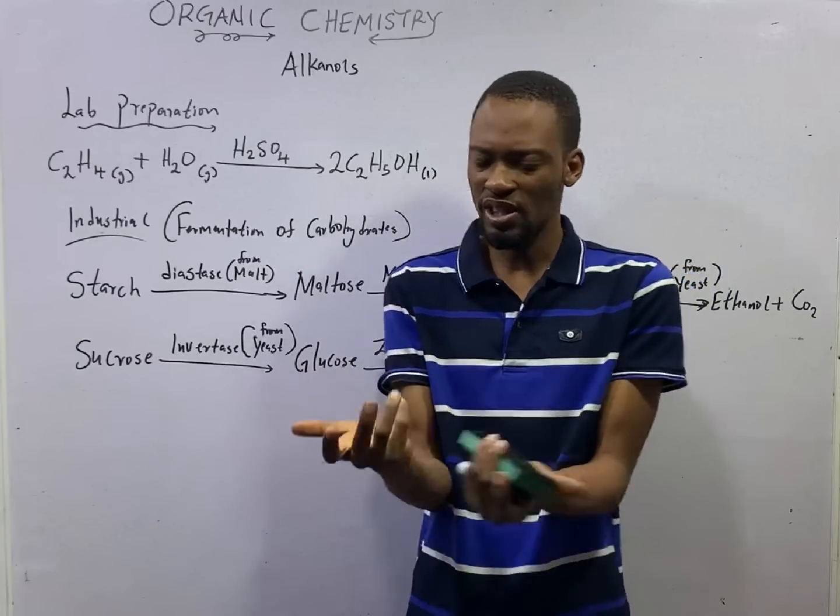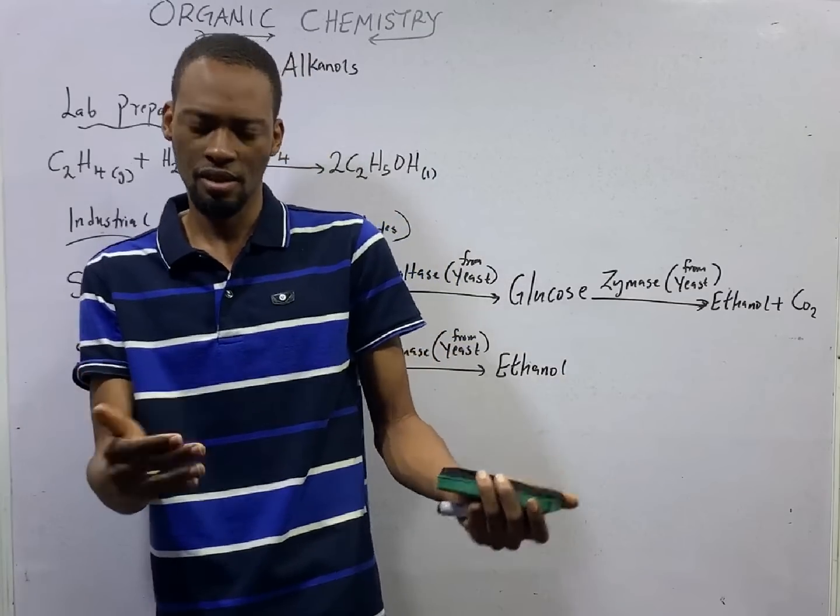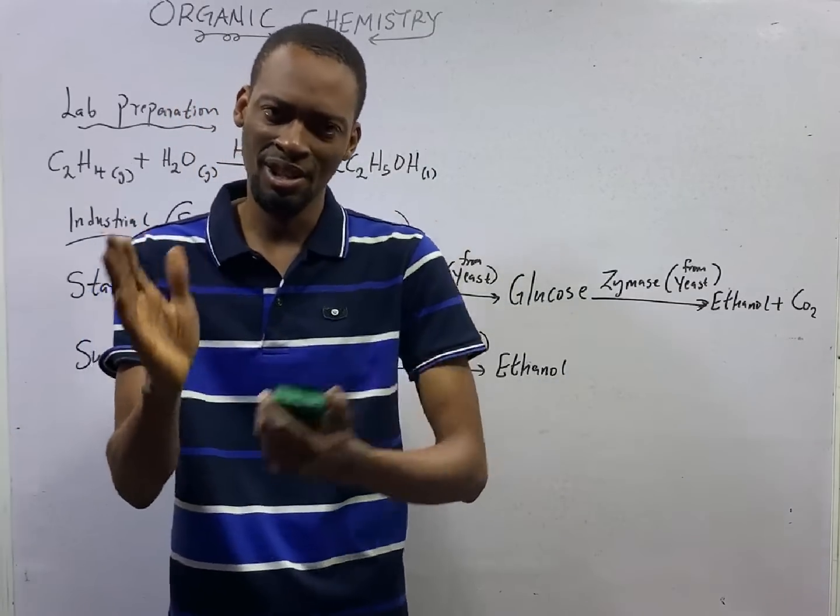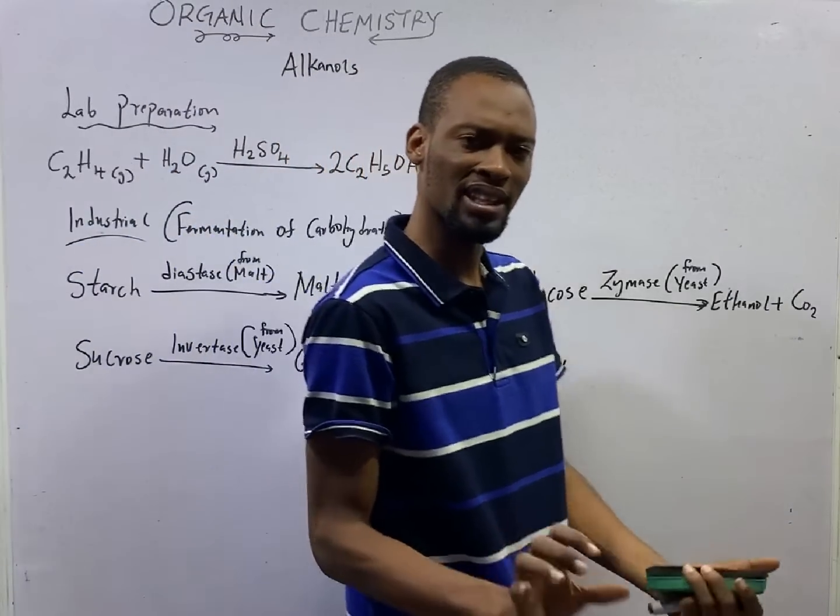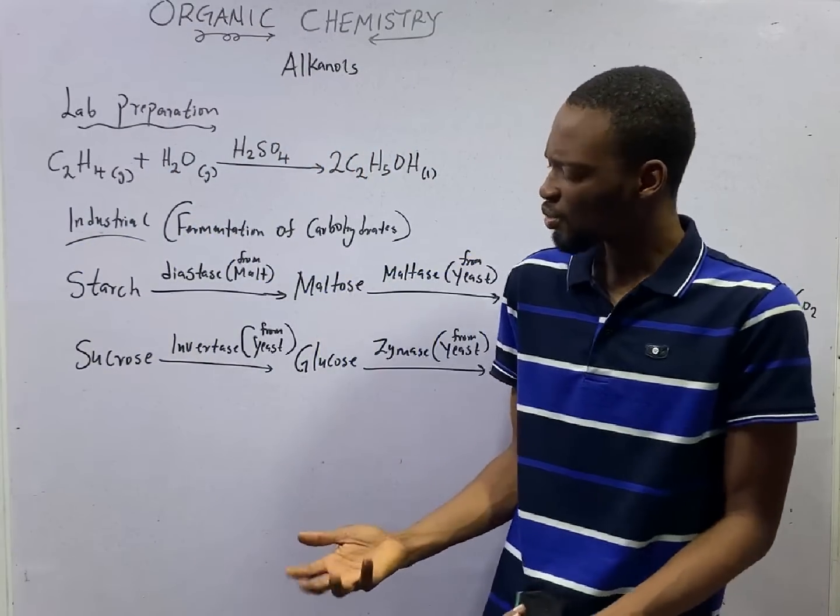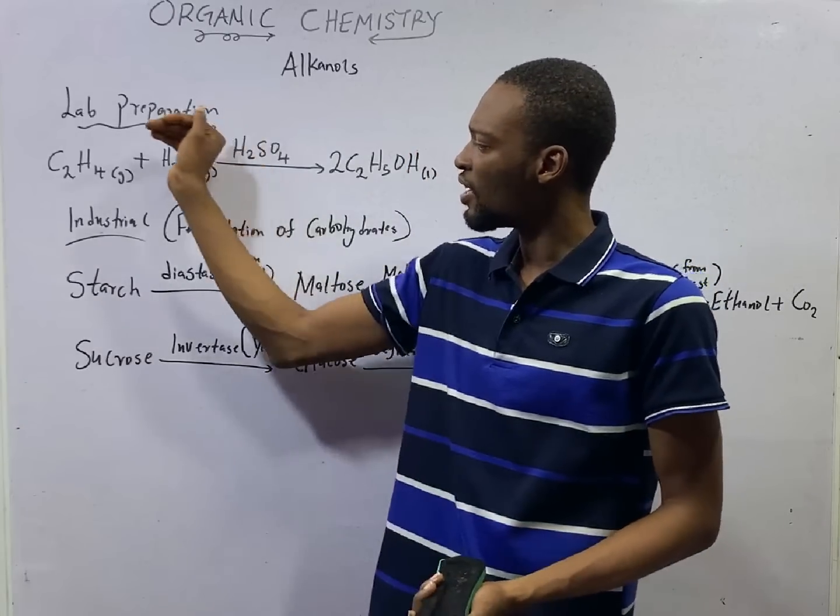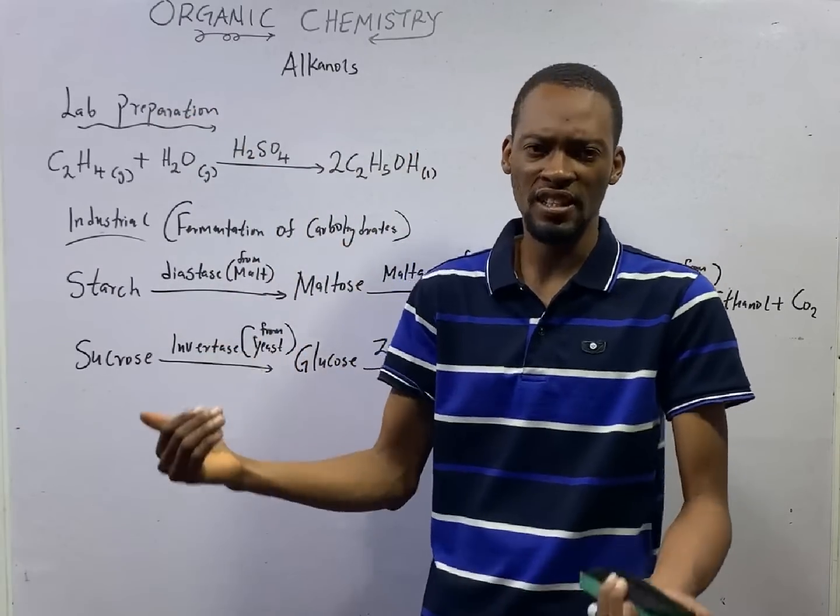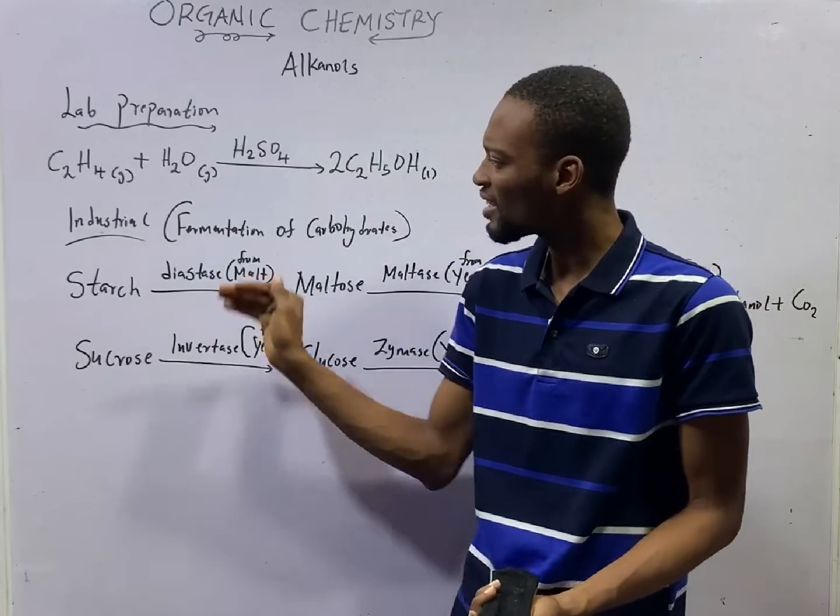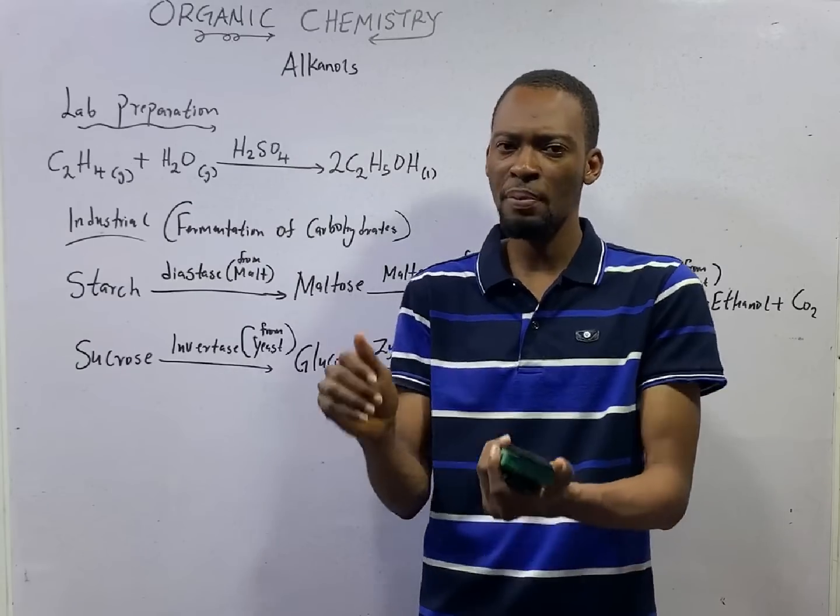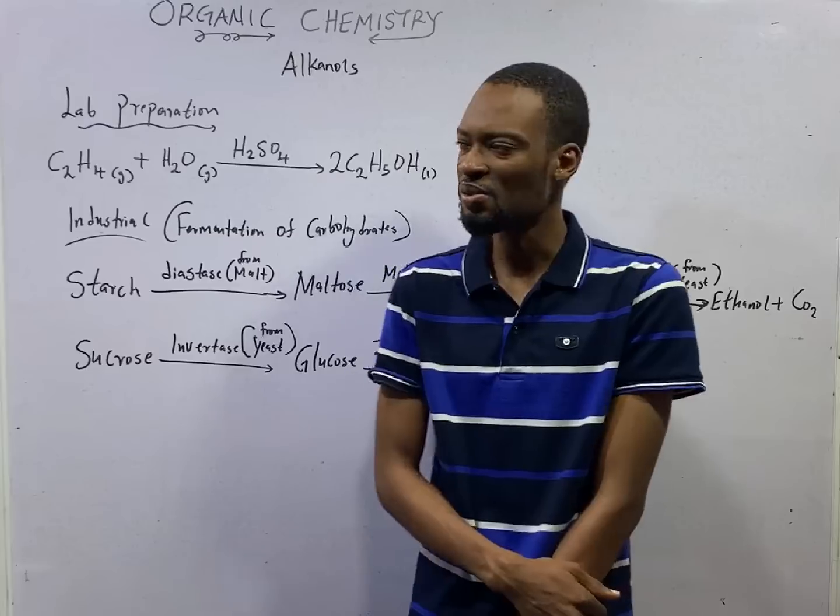Alkanols, just like other compounds, can be prepared in the lab and in the industry. Once you don't need an element or compound in large quantity or you just need them for experiment, you prepare in the lab. But for business or to produce on a large scale, you have to apply industrial preparation. Because lab preparation will give you small quantity of the substance that you need.